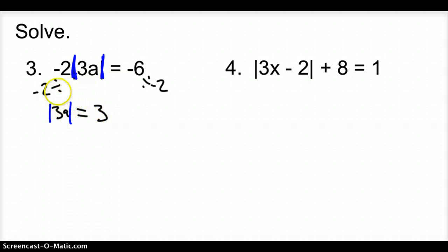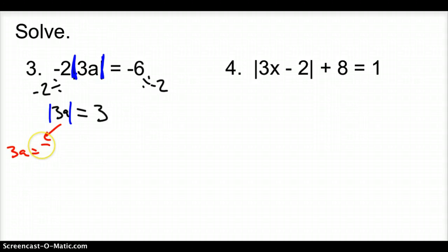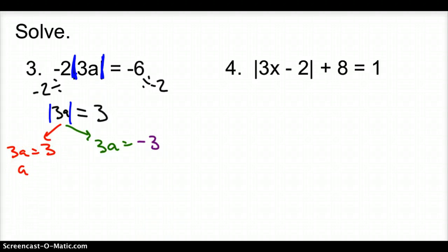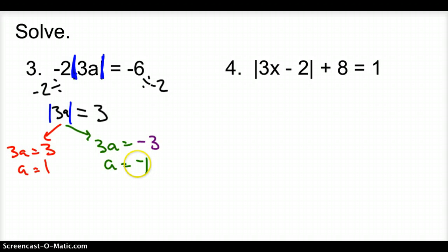When the absolute value is all by itself, we can have two different kinds of answers. The first: 3a equals 3, just like any other equation. But the next time we bring it out, 3a equals negative 3 — because what's inside the absolute value could be negative or positive, so we have to account for that. Solving both: a equals 1, and a equals negative 1. Note this is just a special case — the answers won't always be opposites.